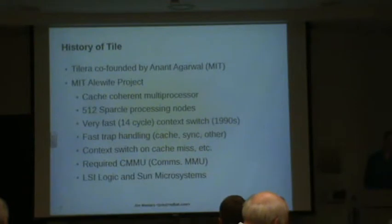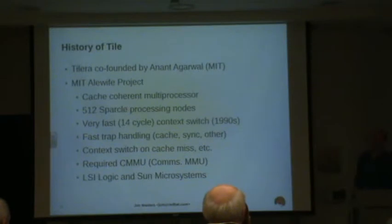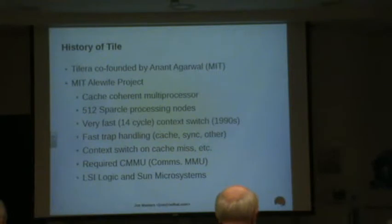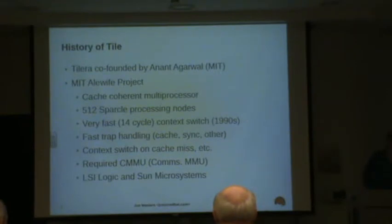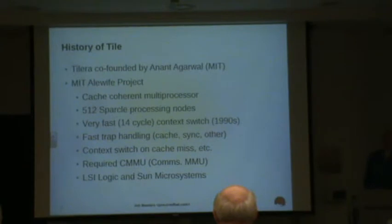Sun basically — as some of you may know — the SPARC architecture that they started is kind of an open standard in some ways, in that other people can implement the SPARC architecture. So what they did was they said to Sun, okay, we need to add a few features to SPARC for academic purposes. And they created something called SPARCLE — basically a Sun SPARC processor, but it's been modified to do very fast context switching.